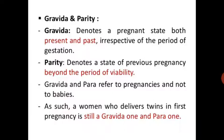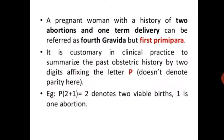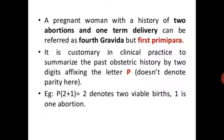Gravida and parity: 'Gravida' denotes a pregnancy state, both present and past, irrespective of the period of gestation. 'Parity' denotes the state of previous pregnancies beyond the period of viability. Gravida and parity are the first pregnancy and prior pregnancies, not noting babies as such. A woman who delivers twins in her first pregnancy is still gravida one and para one. A pregnant woman with a history of two abortions and one term delivery can be referred to as fourth gravida but first or primary para. It is customary in clinical practice to summarize past obstetrical history by two digits following the letter P, where P does not denote parity here.